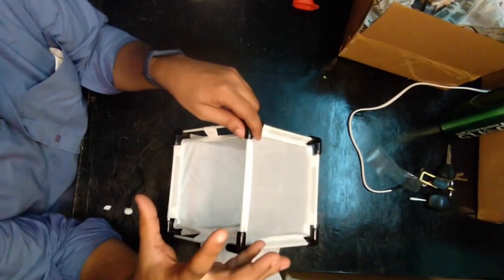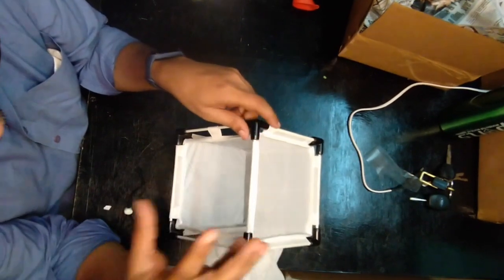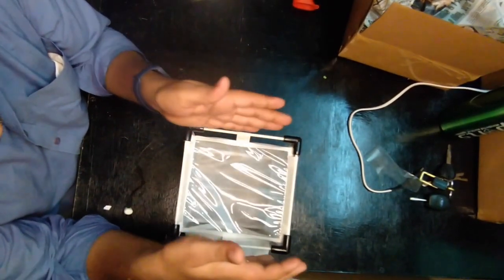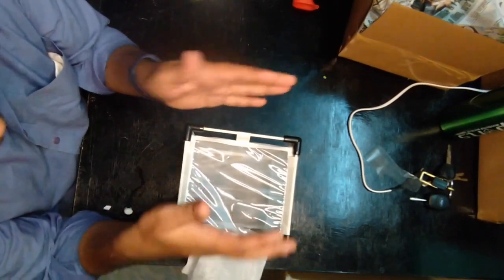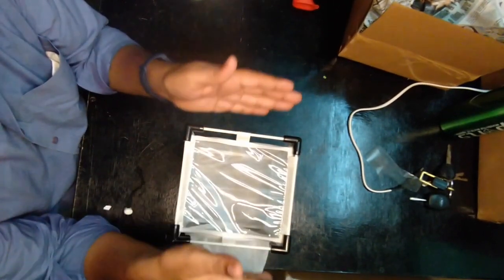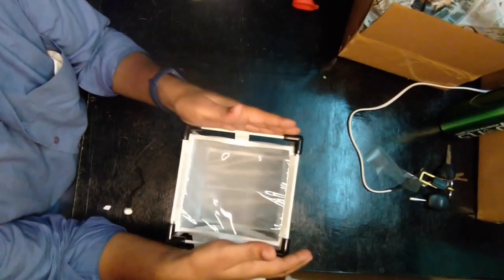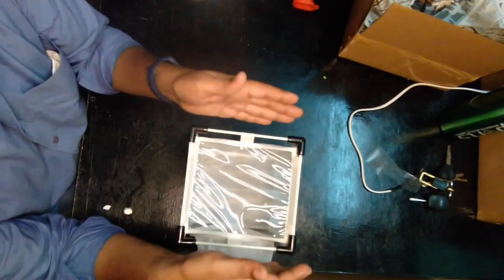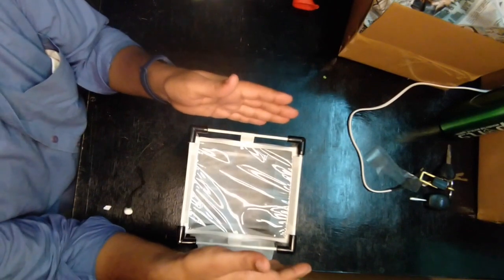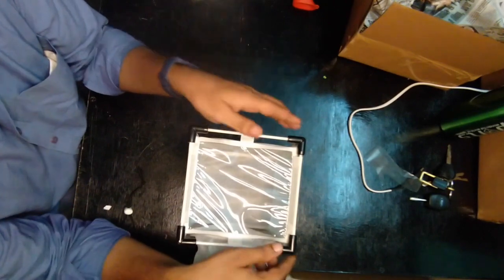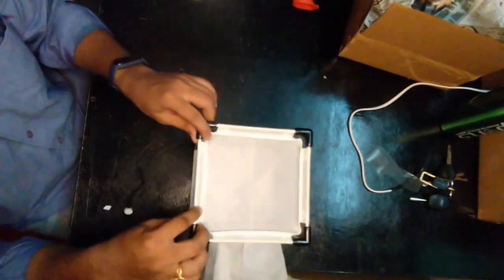This will reduce the volume that is available for rearing of the insects, requiring you to use many more cages. What you are getting here is actually what you get with the 30 centimeter cube general insect cages that have been used.